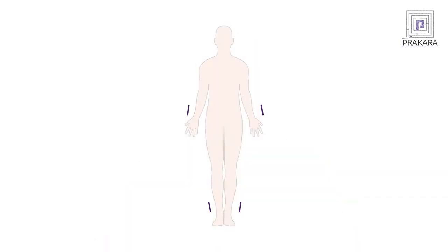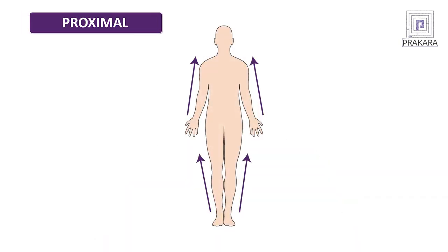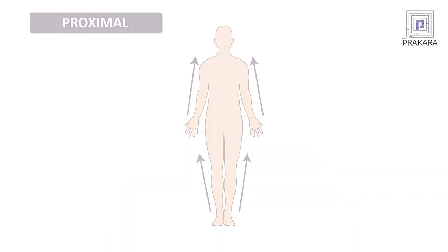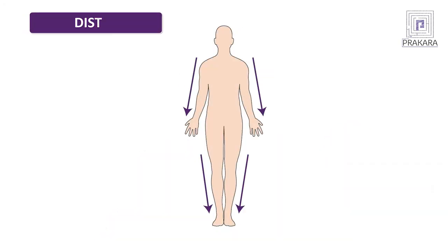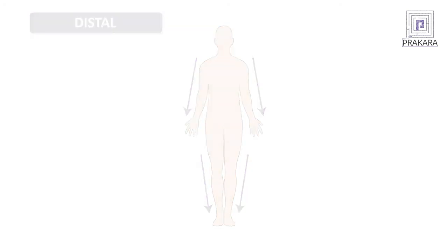The next two directional terms depend on how far a particular body part is from the origin. The first is proximal, meaning that part of the body is closer to its origin. For example, the shoulder is proximal to the elbow. The next directional term is distal, when the body part lies further away from the origin. For example, the hand lies distal to the elbow.